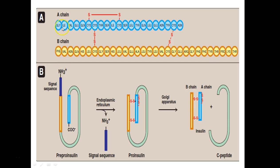This is the primary structure of insulin, where you have two chains. It is a 59-amino-acid peptide having two chains, A and B chains. You can see there are some intra-chain disulfide bonds and inter-chain disulfide bonds in the insulin structure. The second diagram indicates that there is something called a signal sequence at the amino terminal.